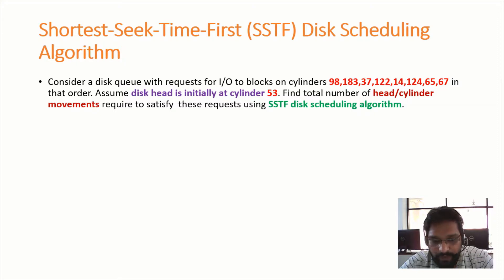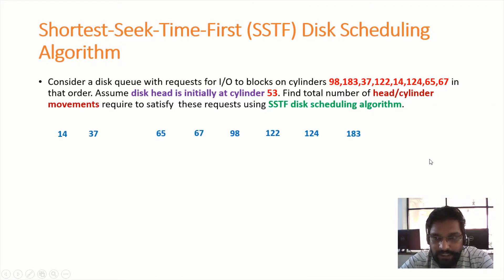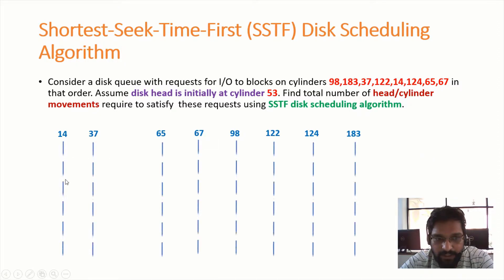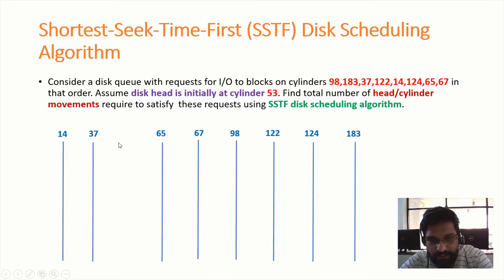In order to solve this problem, we need to arrange all the cylinders in ascending order. Once I write the cylinders in ascending order, let me draw the corresponding lines under each cylinder number. The question says initially the disk head is at cylinder number 53, so let me draw cylinder number 53.